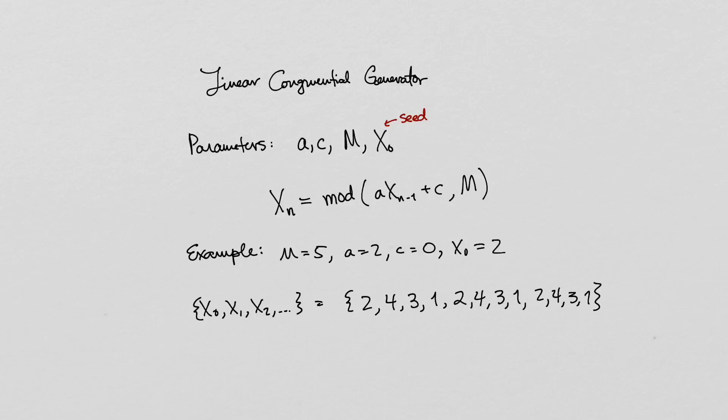This sequence repeats every 4 terms. In other words, its period is 4. A small period is an undesirable property of a random number generator. In practice, we would use a linear congruential generator with an m value more like 2 to the 32 and a and c values chosen to achieve a full period.